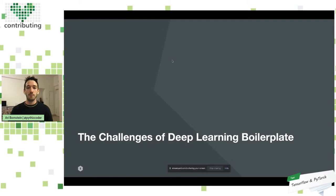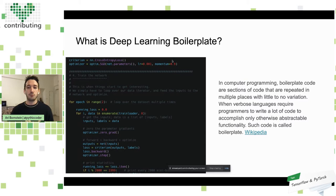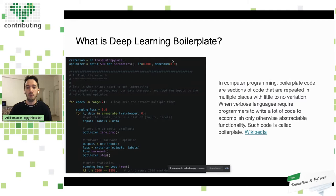You might be asking yourself: what is deep learning boilerplate? In computer programming, boilerplate code are different sections of your code which are repeated in multiple places. You use these patterns a lot with very little variation. When you have really verbose languages, they require developers to write a lot of code to accomplish otherwise abstractable functionality. That code is called boilerplate. Where this gets even more complicated is that it's very easy to accidentally abstract out code and then lose flexibility — and you really need flexibility in deep learning research.